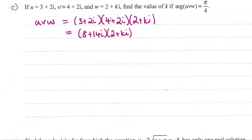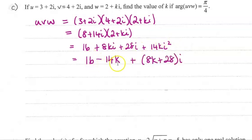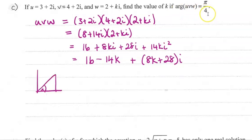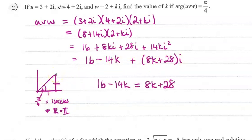Now we do need to expand by hand, and it comes to this — just multiplying out that double bracket. Then i squared becomes minus 1, so this turns into minus 14k. I've rewritten it so the real parts come first and the imaginary parts come second. The other bit of information is that the argument of this is pi by 4, which means we have an isosceles triangle — an angle of 45 degrees — so those two sides will be the same, meaning the real part equals the imaginary part.